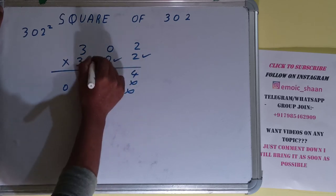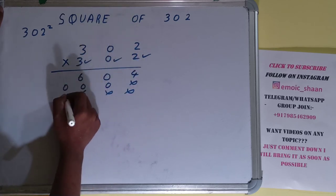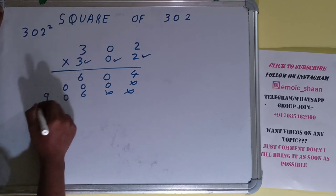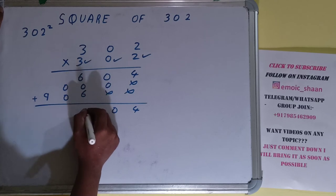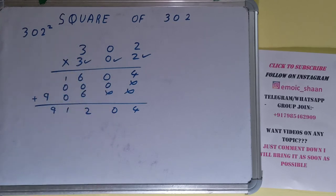And this 3: 3 × 2 = 6, 3 × 0 = 0, and 3 × 3 = 9. Just add everything: 4, 0, 2, 1, 9. Okay, so your answer will be 91204. That will be the square for the number 302.